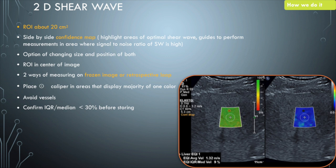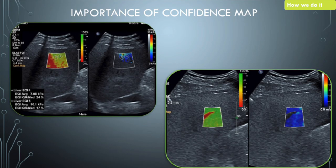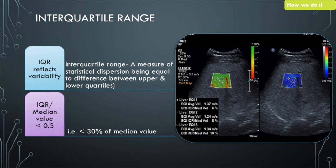An important factor to consider is the IQR upon median, which should ideally be less than 30% and as close to 0% as possible. In 2D shear wave, you have the large box, you place multiple calipers, and get multiple readings within a single acquisition. You can alter the size of the caliper and play around with the images. The confidence map is critical — a large vessel passing through reflects as red, so you know not to take readings in that area. The interquartile range should be less than 50%. These two factors — confidence map and IQR — are very good quality indicators to guide where readings should and should not be taken.